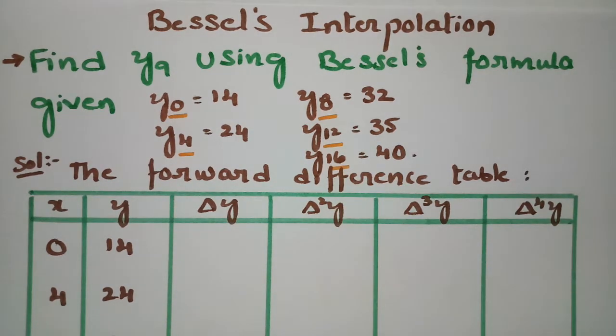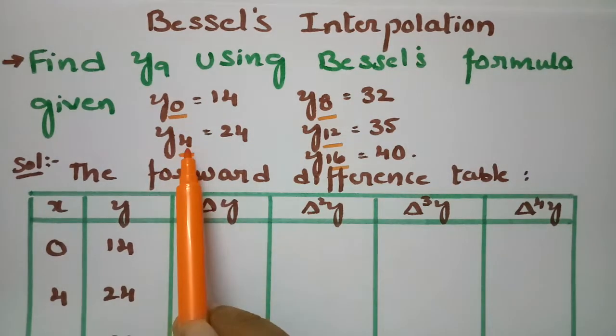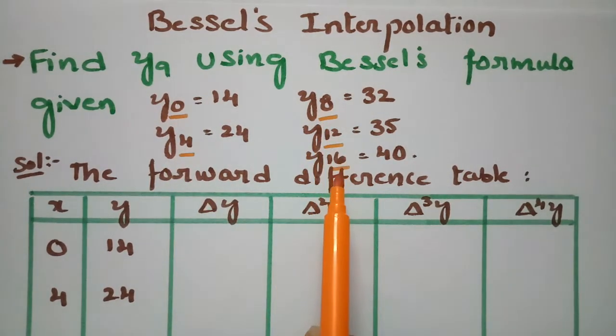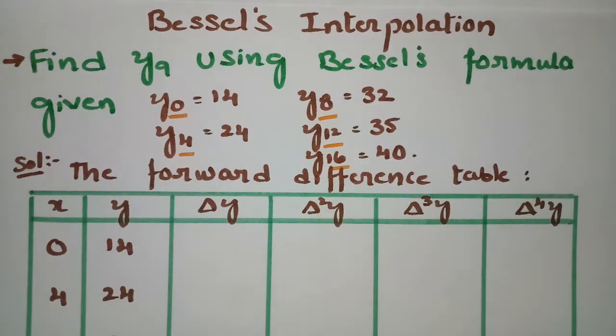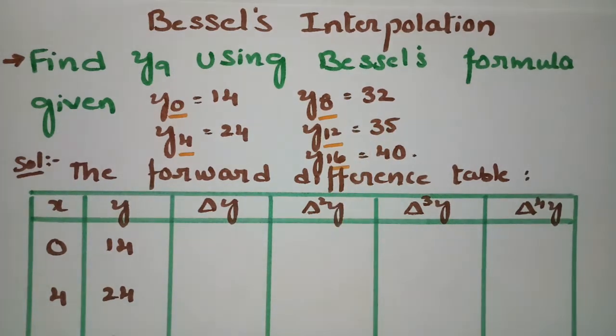First we have to frame the forward difference table. The x values are 0, 4, 8, 12, and 16, with their corresponding y values.